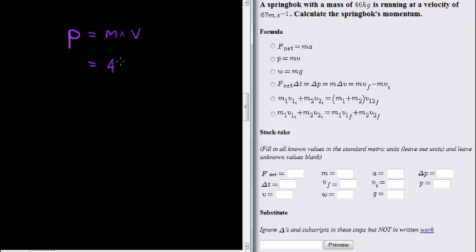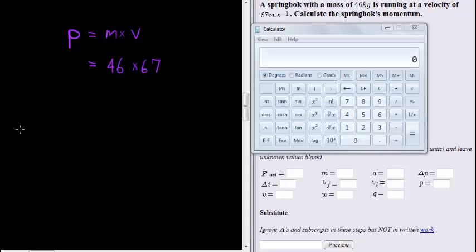So mass 46, velocity 67, and then using the calculator we can easily get the answer: 46 times 67 is equal to 3082.